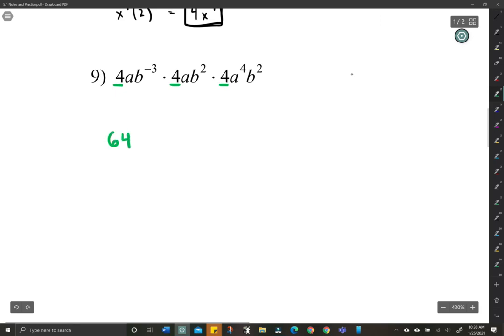Let's think. What can we do with the a's? We can add all the exponents. So 1 and 1 and 4 is a to the 6th.